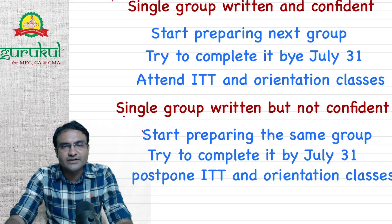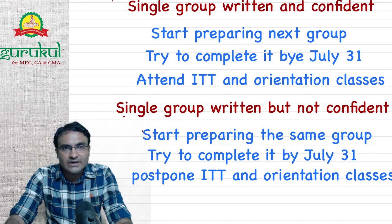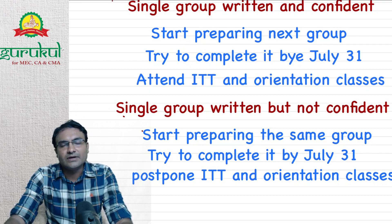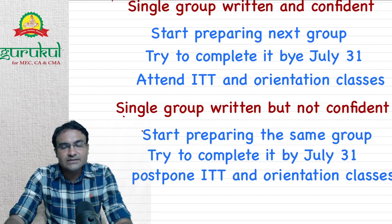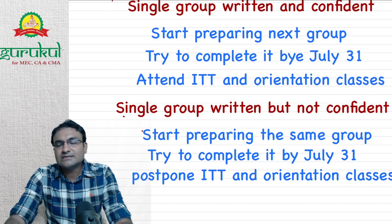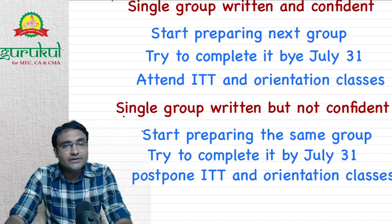For students who have given a single group but are not confident, you must be very careful. Start preparing and revising the same group. Revise Group 1 during June and July, and try to complete this revision by July 31st. By the time results are declared at end of July, you will have already revised your group.